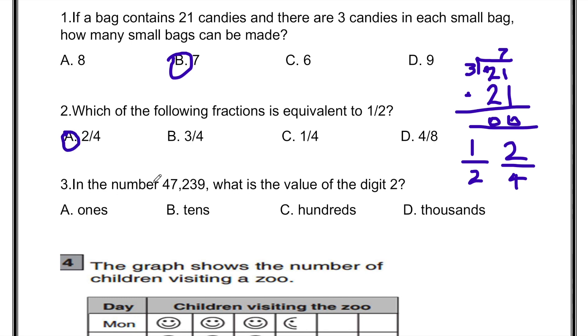In the number 47,239, what is the value of the digit 2? In 47,239, the number 2 is here. So this is ones, 4 is 10,000, the 7 is 1,000, the 2 is 100, the 3 is 10, and the 9 is 1. Ones, tens, hundreds, thousands, and ten thousands. So 2 comes in hundreds. The answer is C, hundreds.